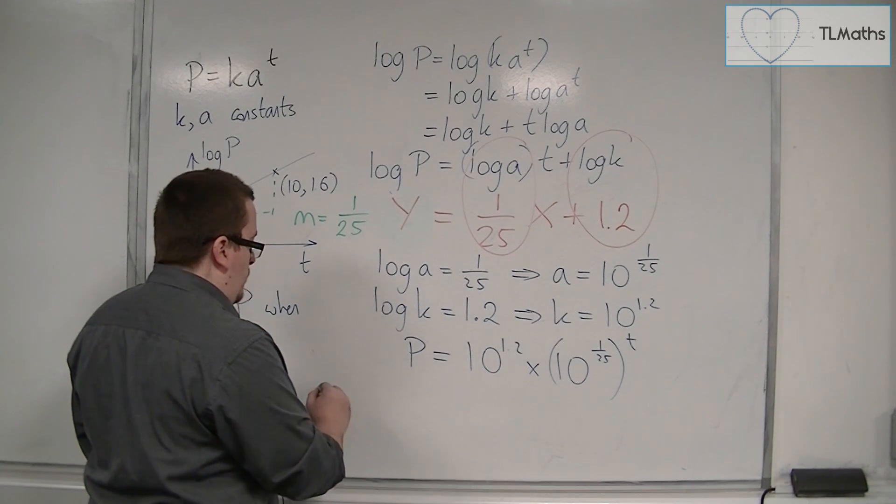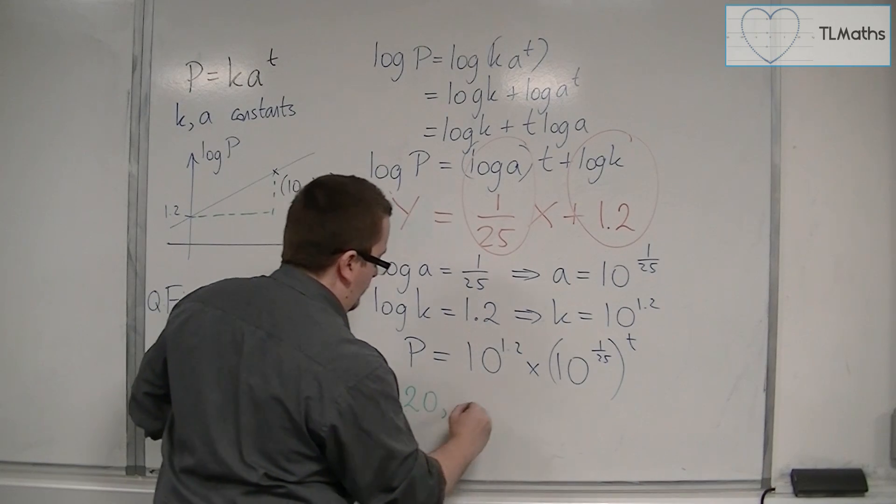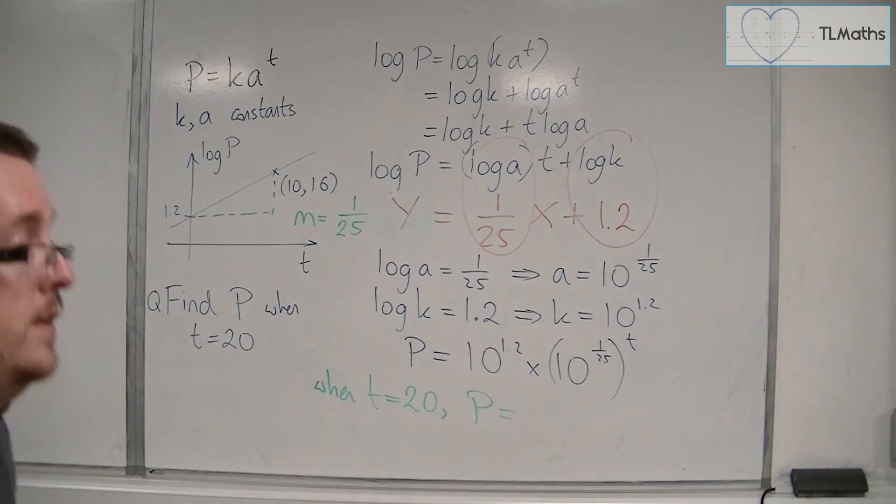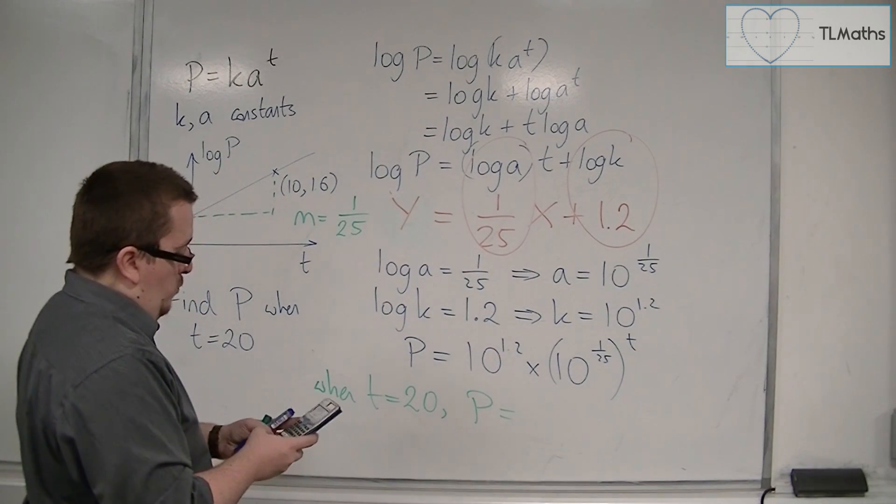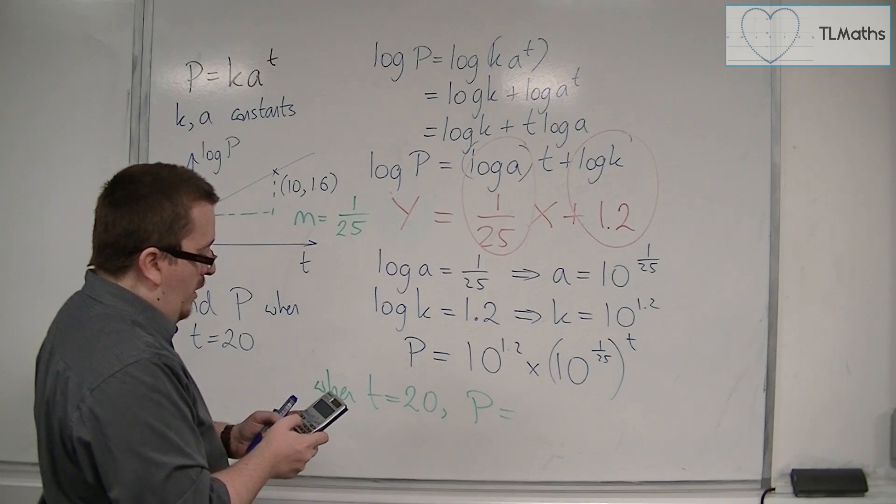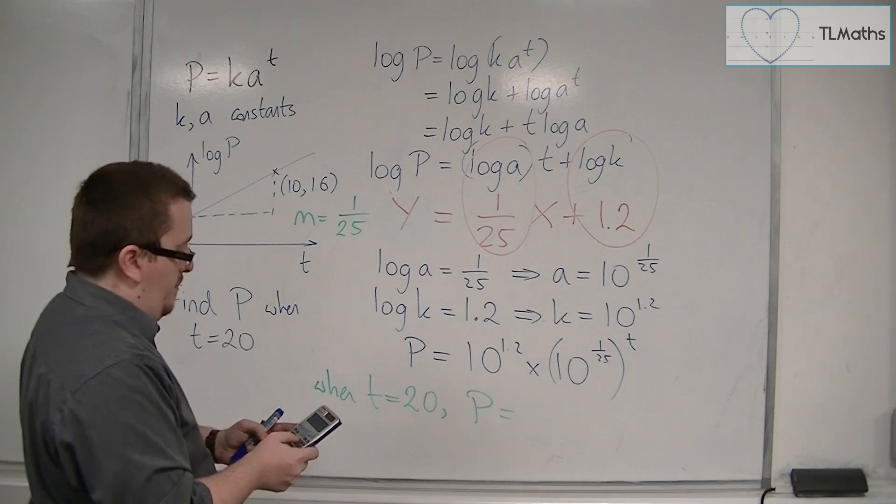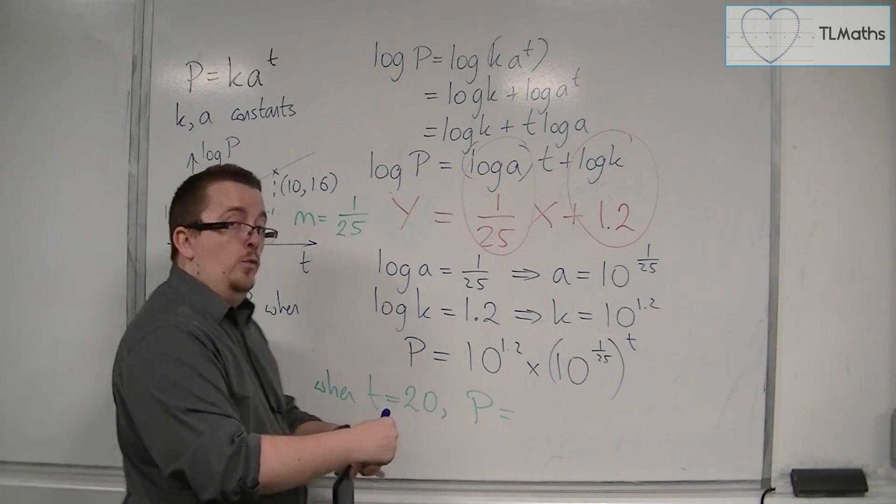So, when T is 20, if I substitute that into the equation using a calculator, then we've got 10 to the 1.2 times by 10 to the 1 over 25, and that is to the power of 20. And that is equal to 100.